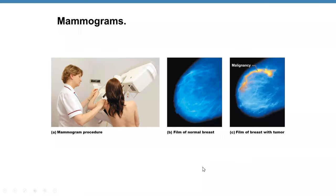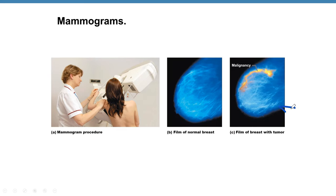Mammography produces an X-ray film of breast tissue. A normal breast film is compared against a film showing a tumor with malignancy.